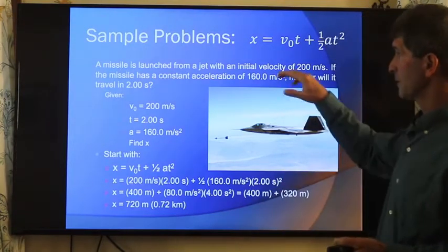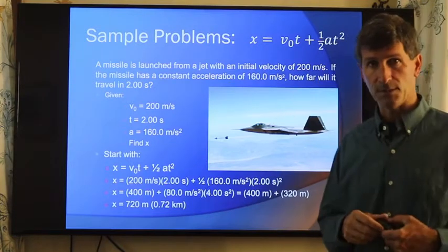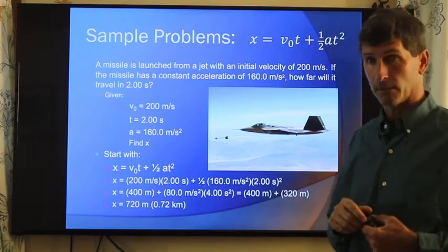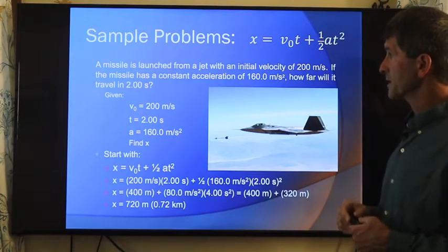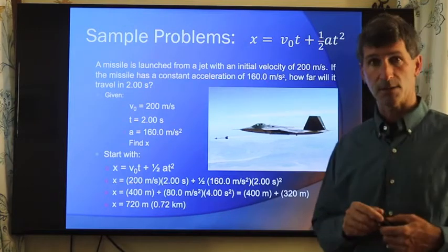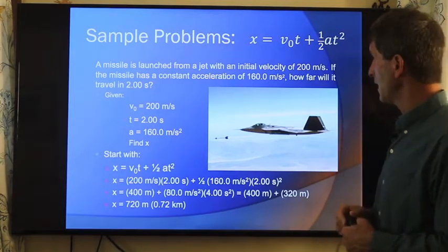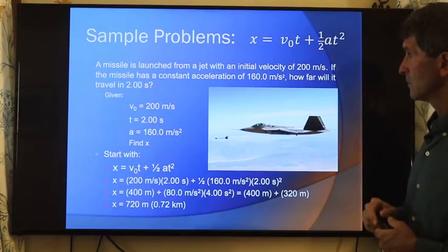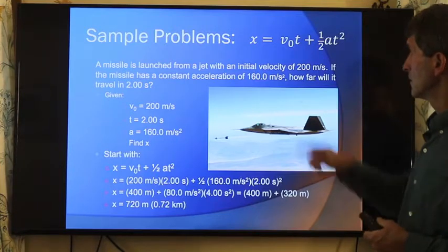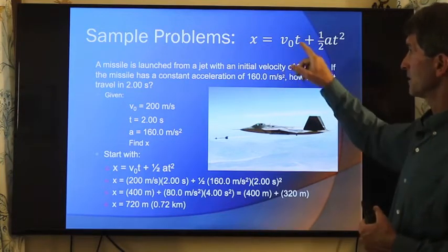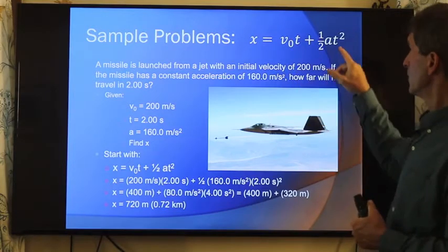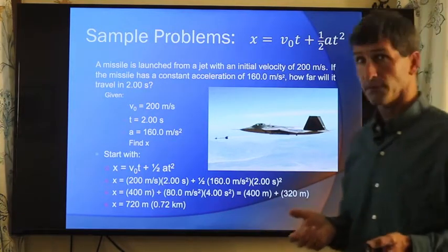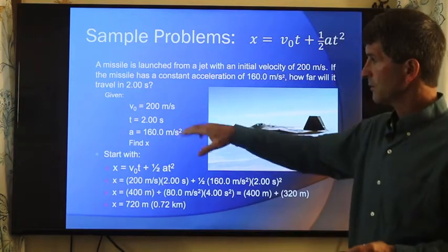Here we have a missile launch from a jet. Initially, the speed is 200 meters per second. So, my equation has to have a v₀ in it. Most of them do. The missile has a constant acceleration of 160 meters per second squared. So we also have to have a. How far will it travel in two seconds? What are we doing here? We know the initial velocity. We know the time, two seconds. We know the acceleration. We can solve for distance of travel, displacement.